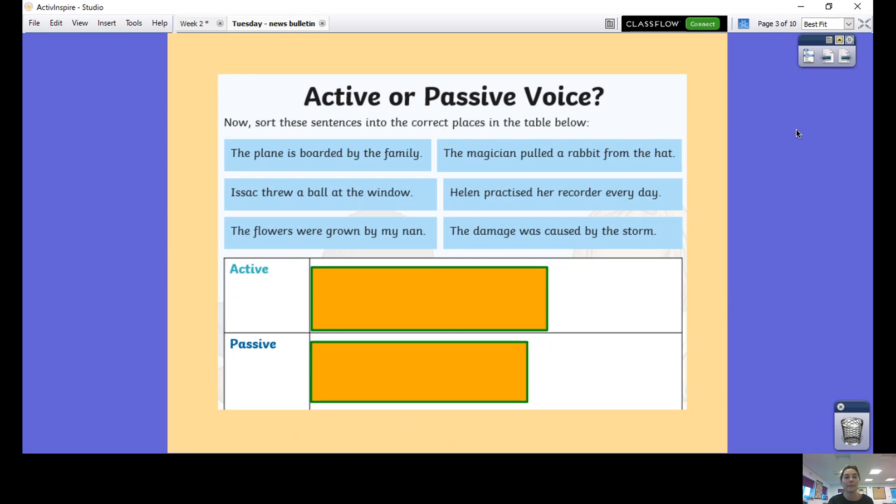I'm going to read them all out for you first: The plane is boarded by the family. The magician pulled a rabbit from the hat. Isaac threw a ball at the window. Helen practiced her recorder every day. The flowers were grown by my nan. And the damage was caused by the storm. Pause the video now, give yourself maybe three to four minutes and decide whether you think each of these sentences is written in the active voice or the passive voice.